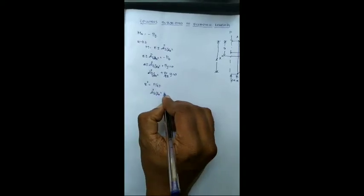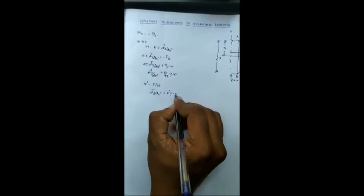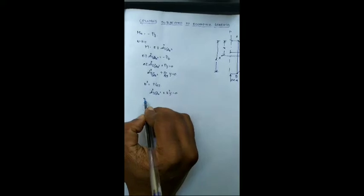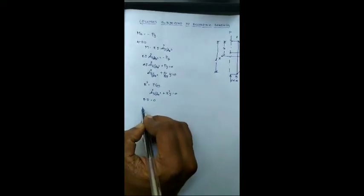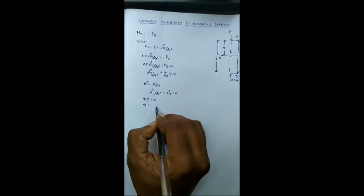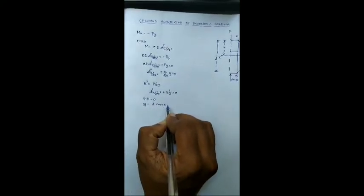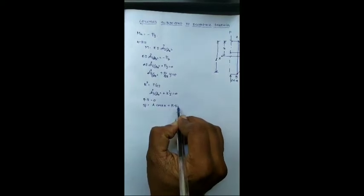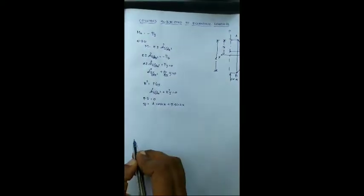Therefore we get d square y by dx square plus k square y is equal to 0. In this particular case, the particular integral becomes 0 and the y solution will be the complementary function a cos kx plus b sin kx.